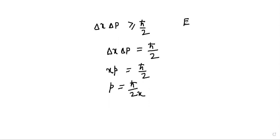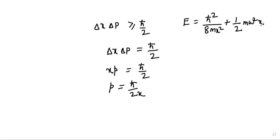Now substituting p = ℏ/(2x) into the energy expression — p²/2m becomes ℏ²/(8mx²) — plus (1/2)mω²x². So the energy E is now expressed as a function of x, with x appearing in both terms.